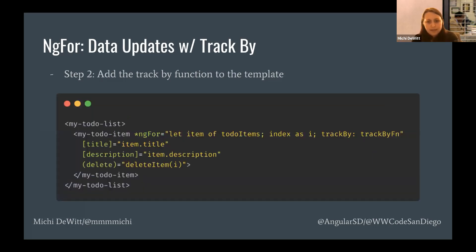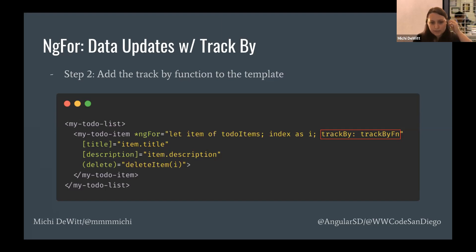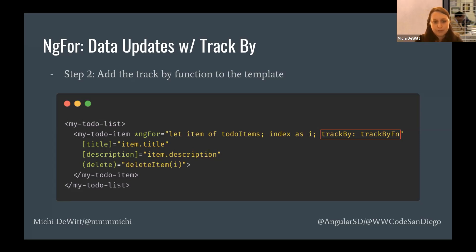In the HTML, you just add 'trackBy: trackByFn' to the ngFor. The trackBy function takes an index and the item — in this case a todo item — and returns the ID we want to use for tracking. Those couple lines of code mean that now, when I add a new to-do item to an immutable array, it's not going to flash the entire list or rebuild each component unnecessarily — it's only going to rebuild the ones that actually need to be rebuilt. I recommend always adding trackBy functions by default, especially if you're using on-push or an immutable data strategy like NgRx store, to avoid discovering the data flicker issue later in production.